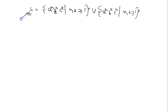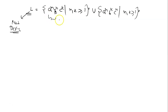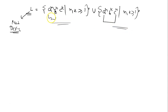This language L1 is a standard non-DCFL language. You can clearly see why — in this language, either we have to check whether the number of a's equals the number of b's, or we have to check whether the number of a's equals the number of c's. Since we don't know which part to check, this language is not DCFL.